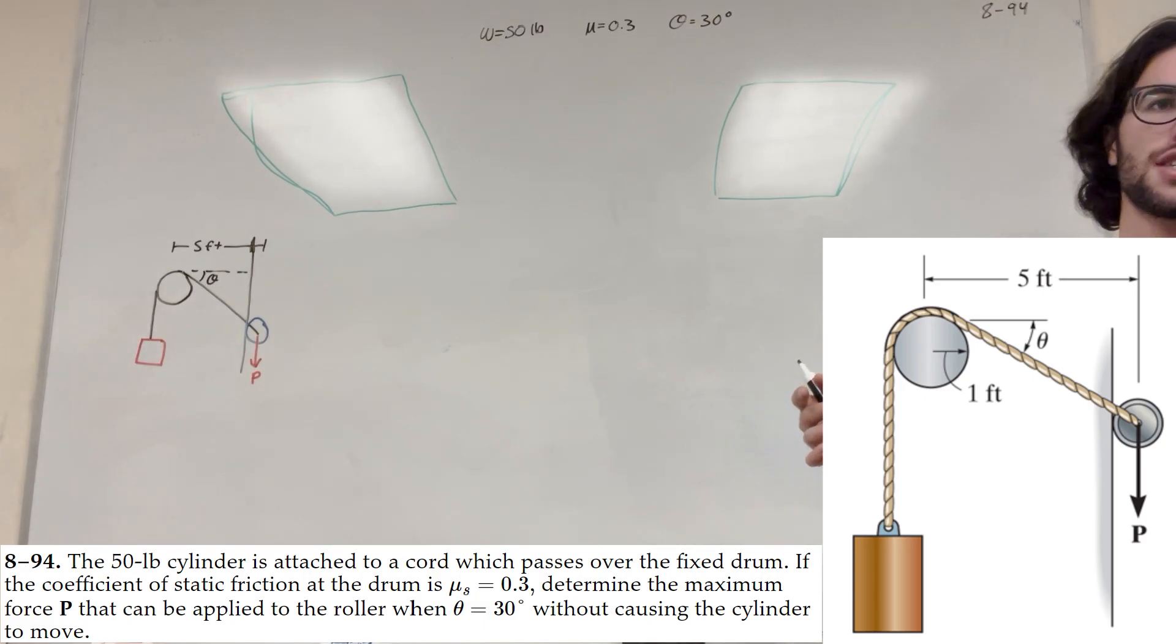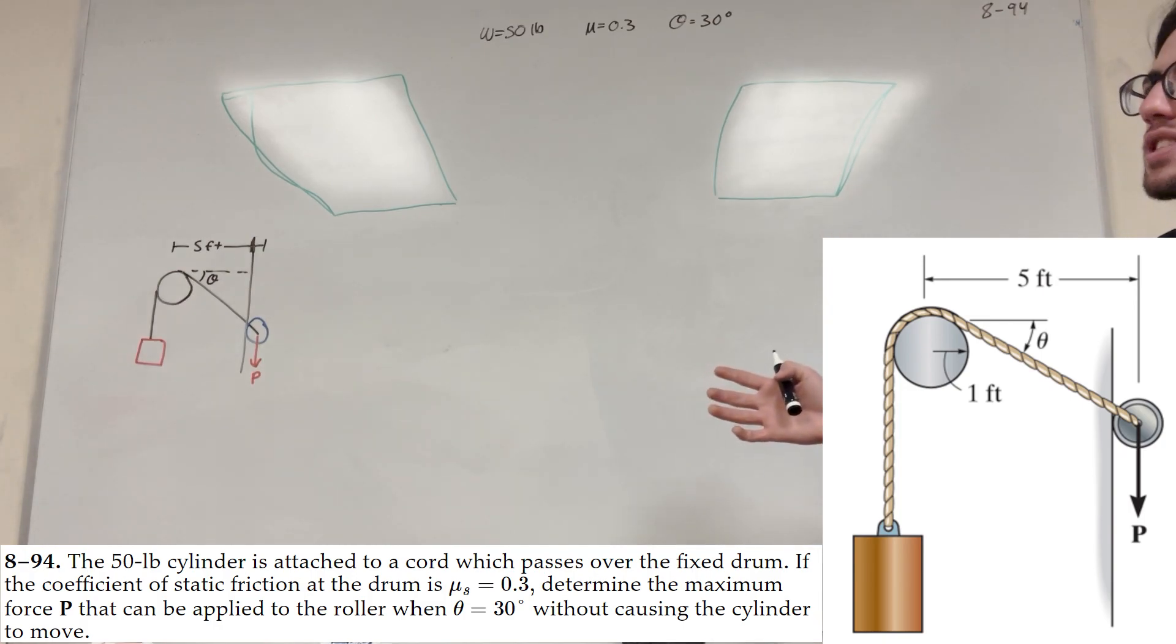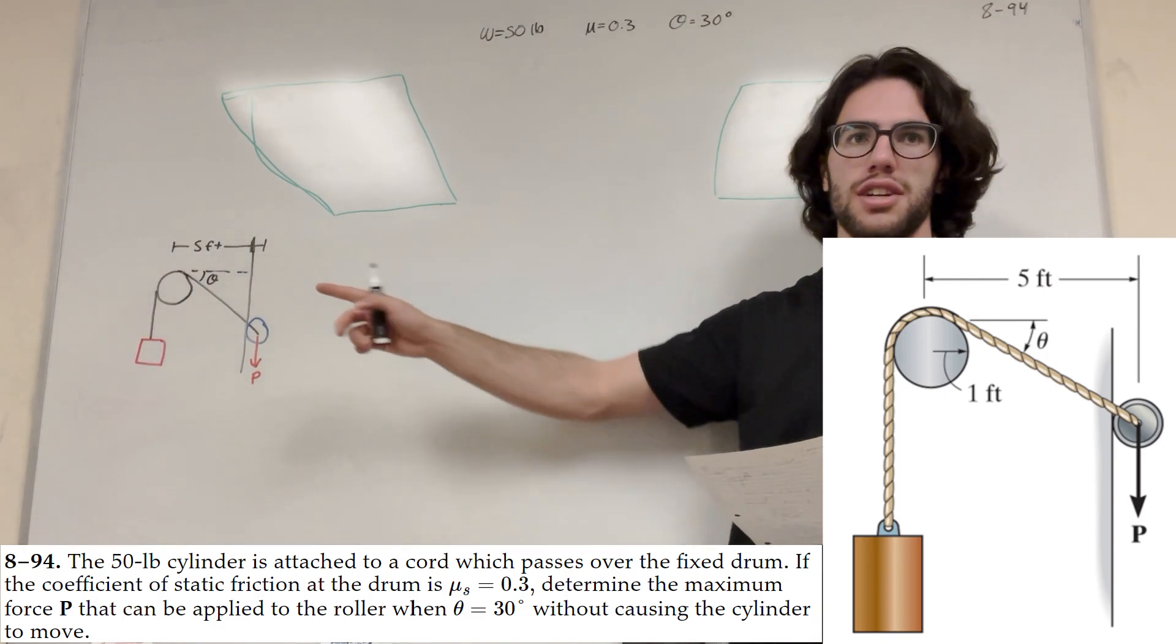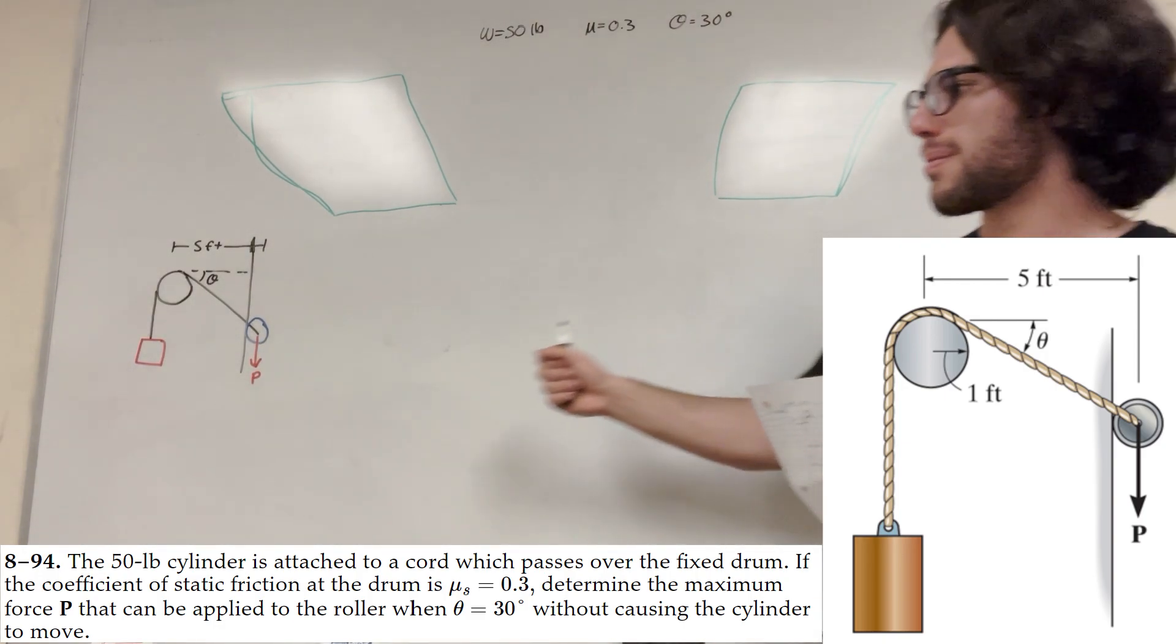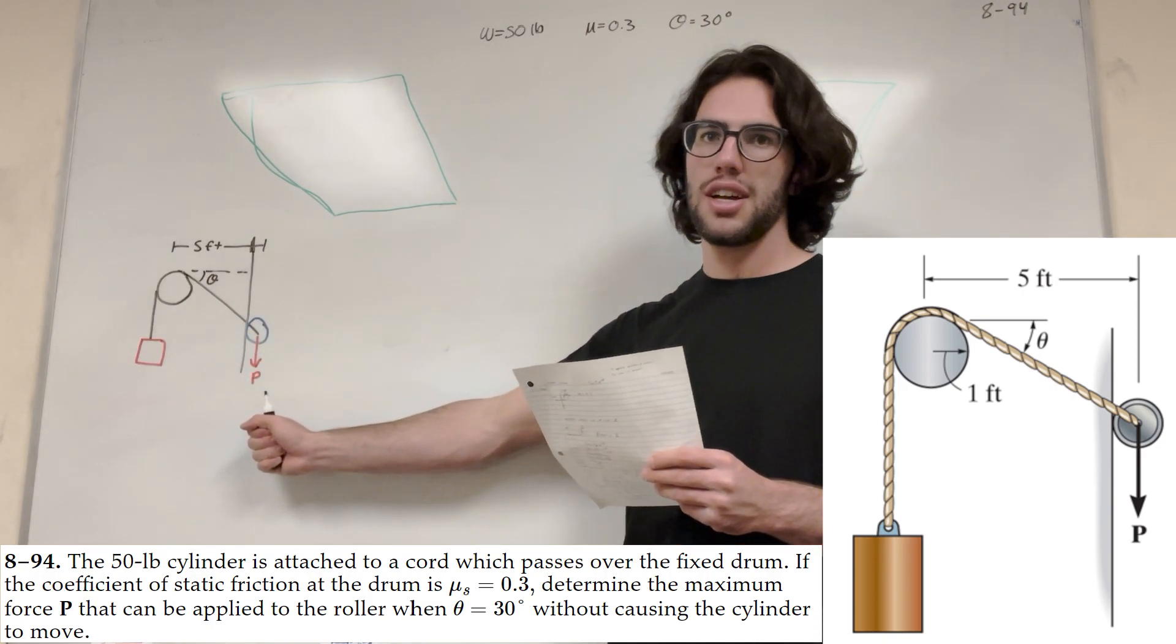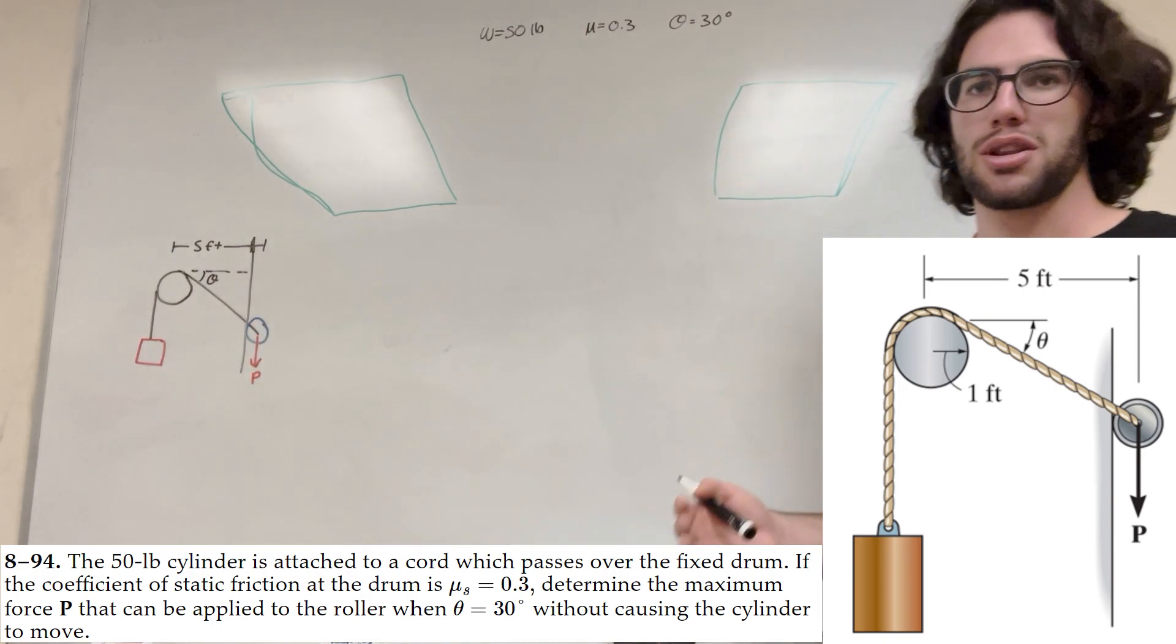So we have a 50-pound cylinder attached to a cord which passes over a fixed drum and then the coefficient of static friction is 0.3. We have our theta of 30 degrees and we're trying to find the maximum amount that we can pull on P here and have the system stay at equilibrium.